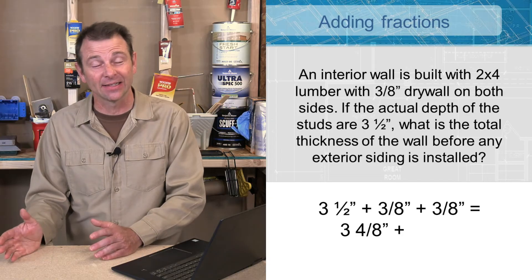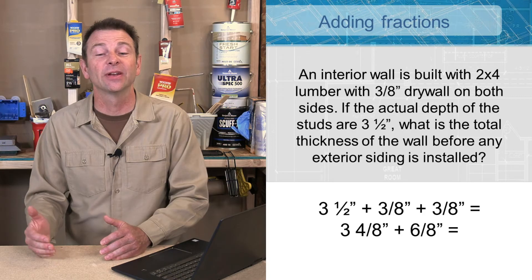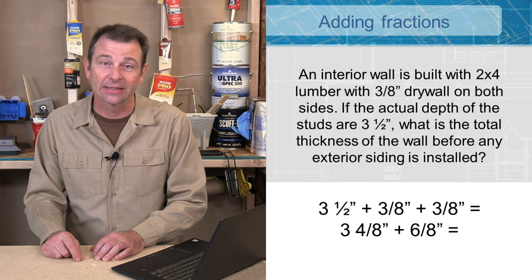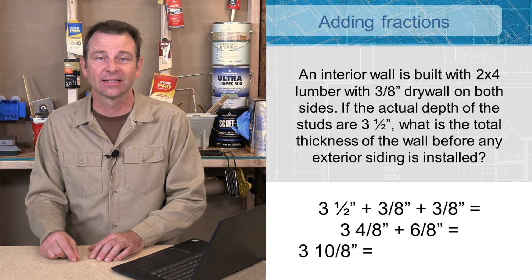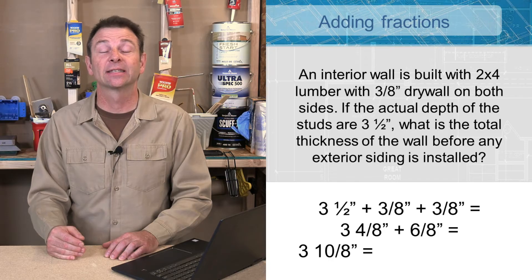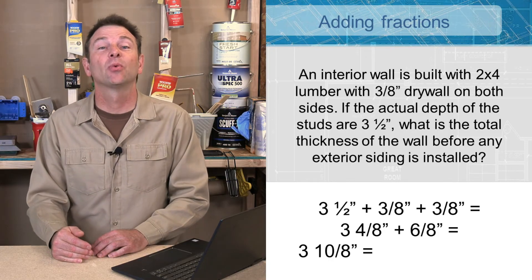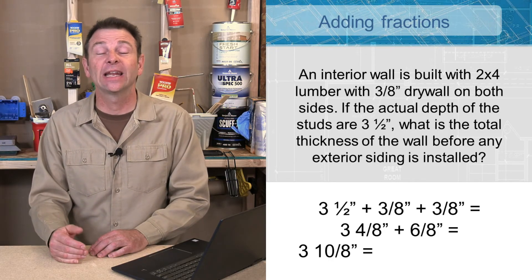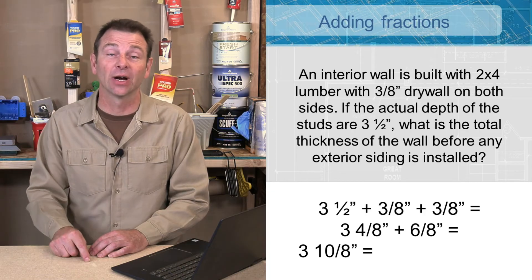Once again, we have an improper fraction here - we have 3 and 10/8, it's heavy on the top. So we can subtract one from 10/8, which is actually 8/8, and we can carry it over, add it to our three. So we have 3 plus 1, which is 4, and we're left over with 2/8.